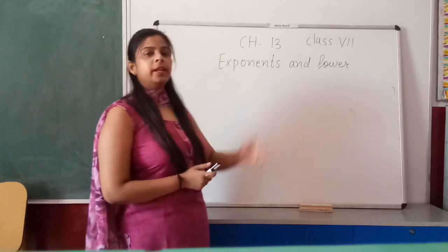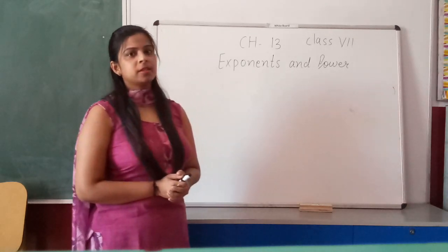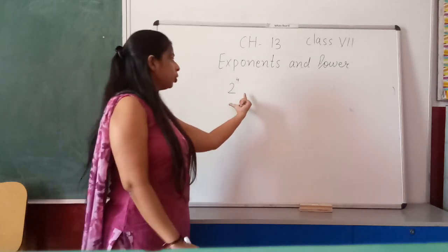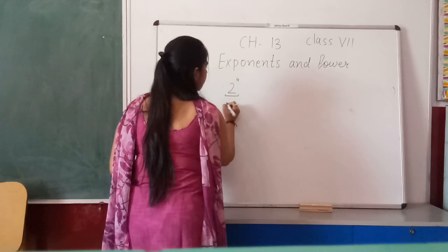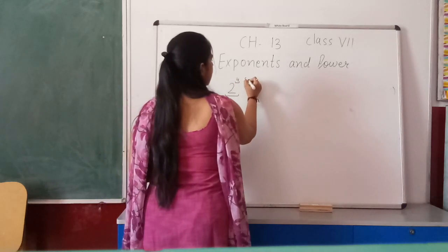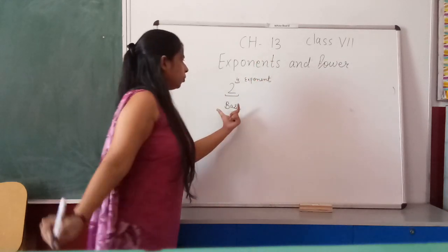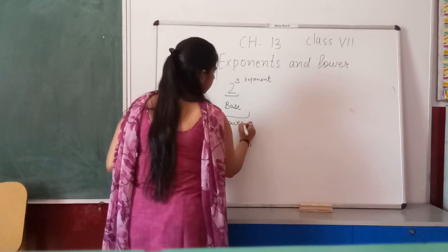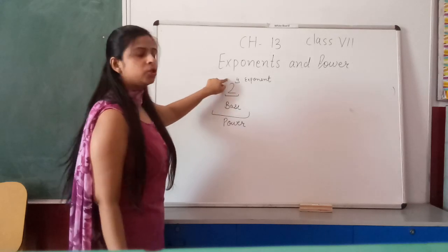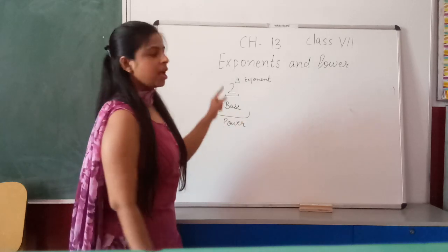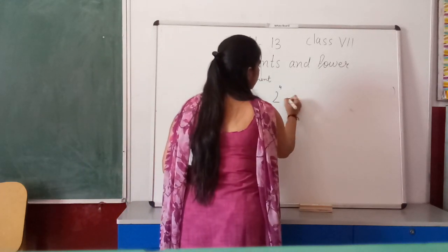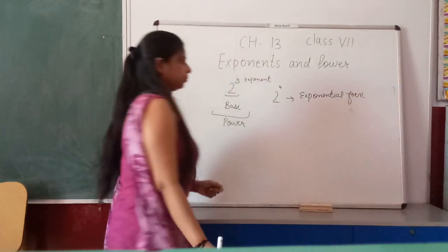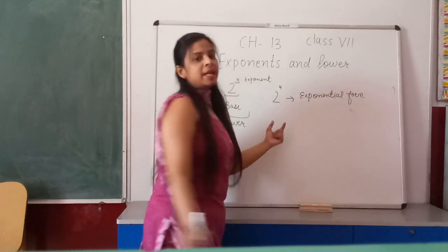Today we are going to start chapter number 13, that is Exponents and Powers. If I write 2 raised to power 4, here 2 is the base and 4 is the exponent. Together they form the power, and this form we call exponential form. So 2 raised to power 4 is exponential form.